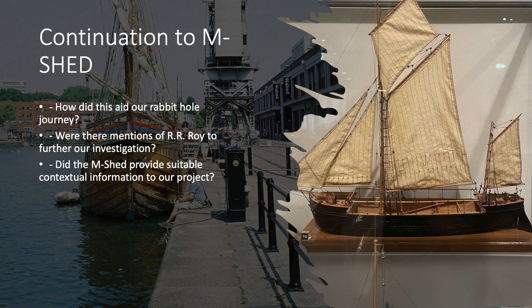We felt that we could understand R. R. Roy and his involvement within the East India Company better if we visited museums such as the M Shed. The M Shed included several models of boats used for shipments during the time when slavery was legal, and offered a variety of sources and different voices — from those who were pro-slavery, to the enslaved, and those who fought for emancipation. There were boat models and dates of transportation shipment records. Ultimately, there wasn't a lot of information on Roy at the M Shed, but it was useful to see the different ship models and the legacies they left at Bristol, and it allowed us to refine our search for an answerable research question.